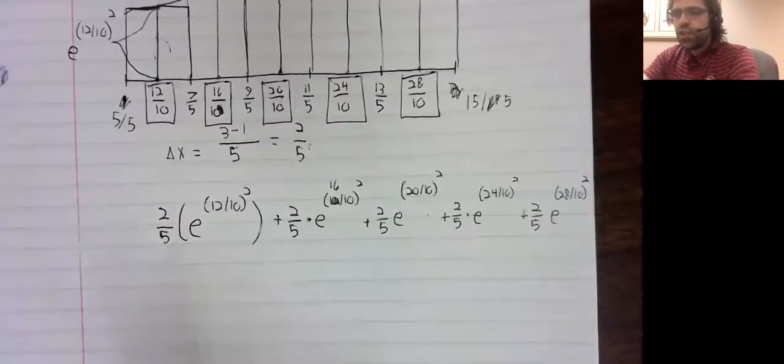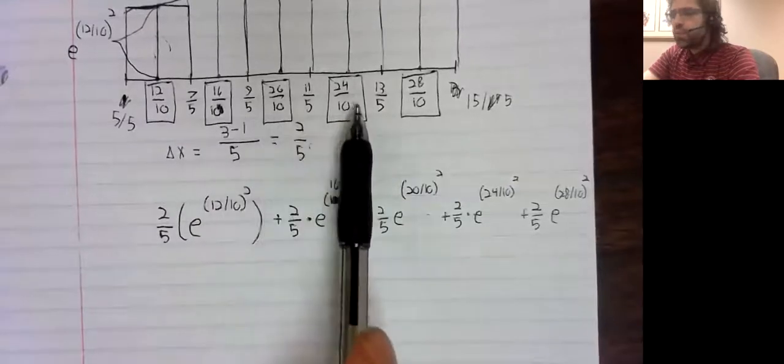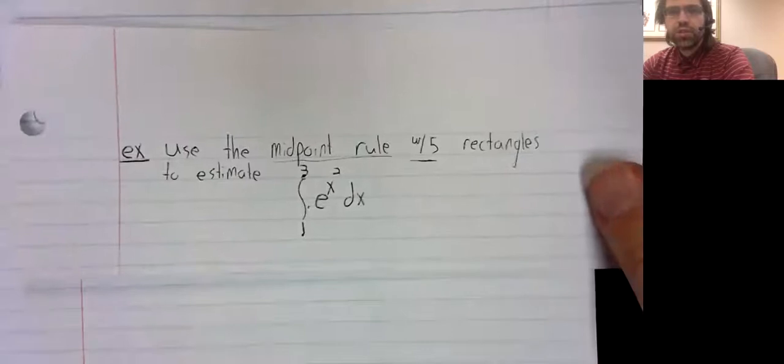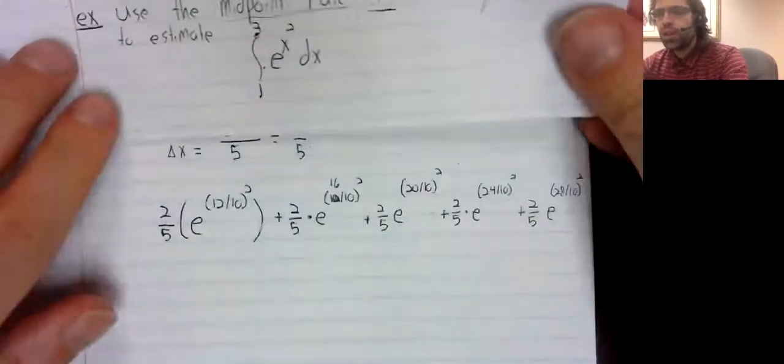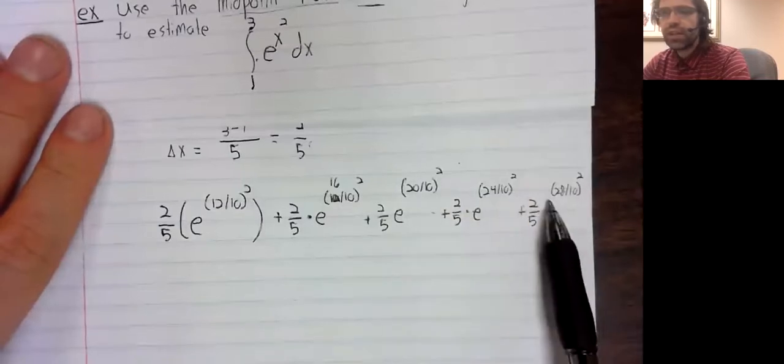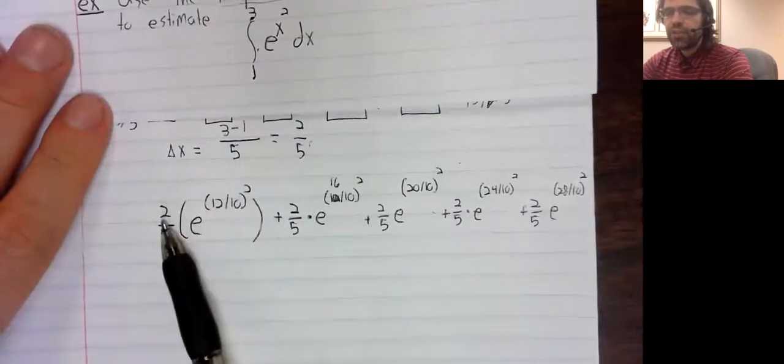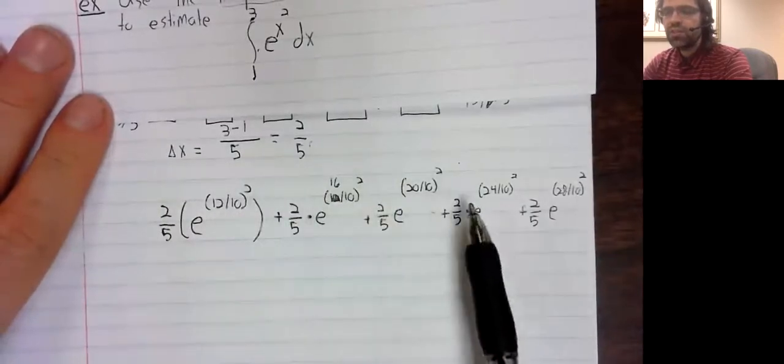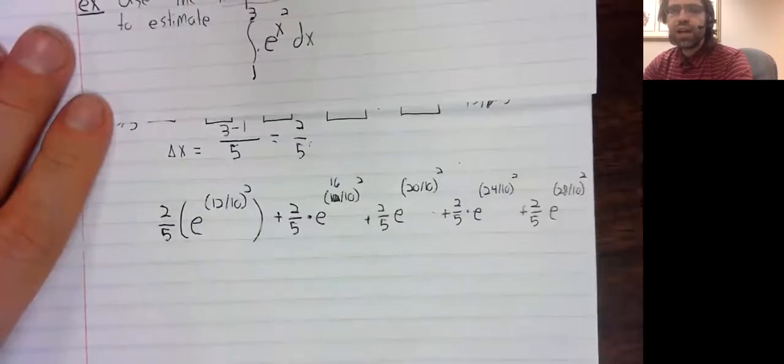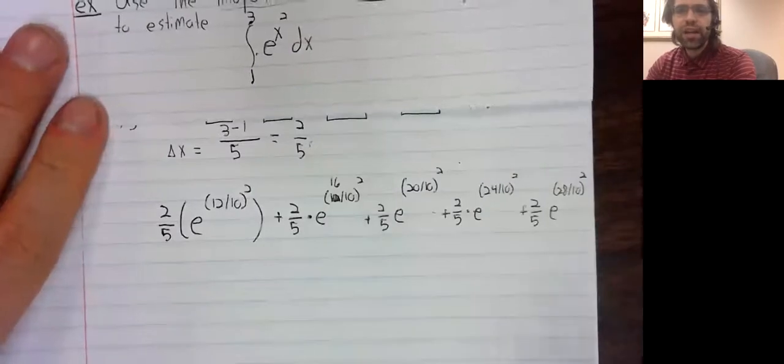You see, we just plug these midpoints into our formula to get the heights of the rectangles. Delta x gives us the base. So, the base times the height. And we do that for all of the rectangles. And then we just add this up on our calculator.